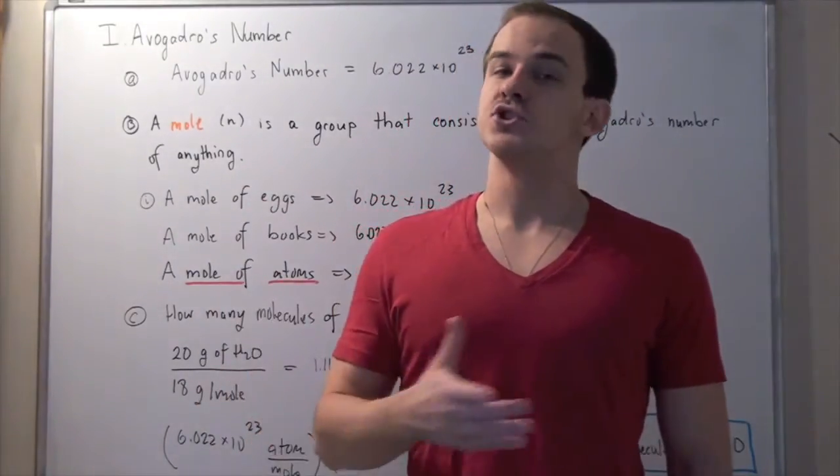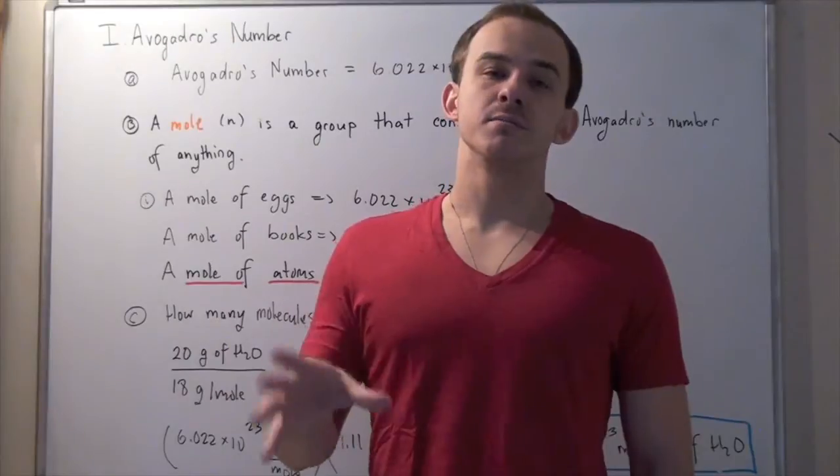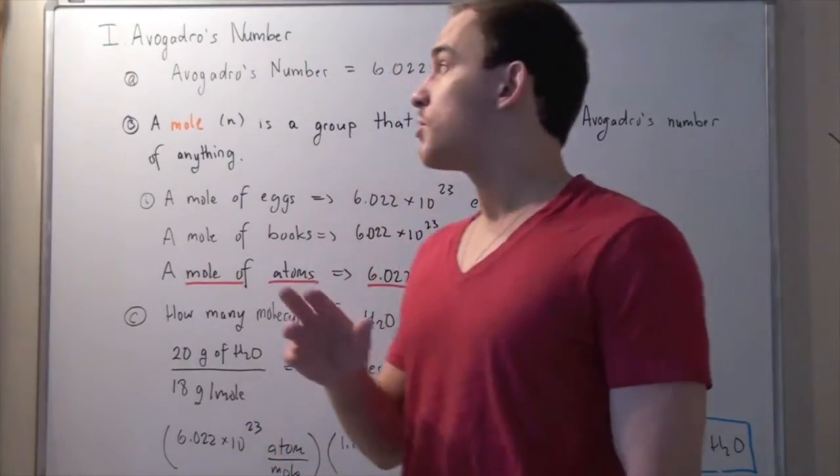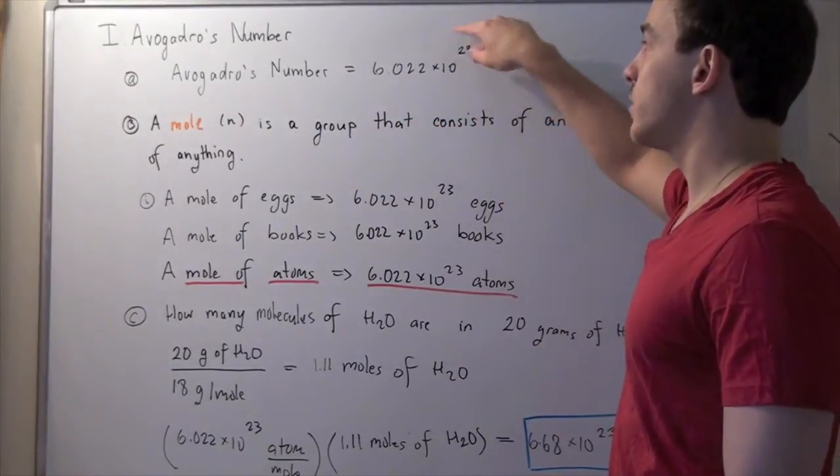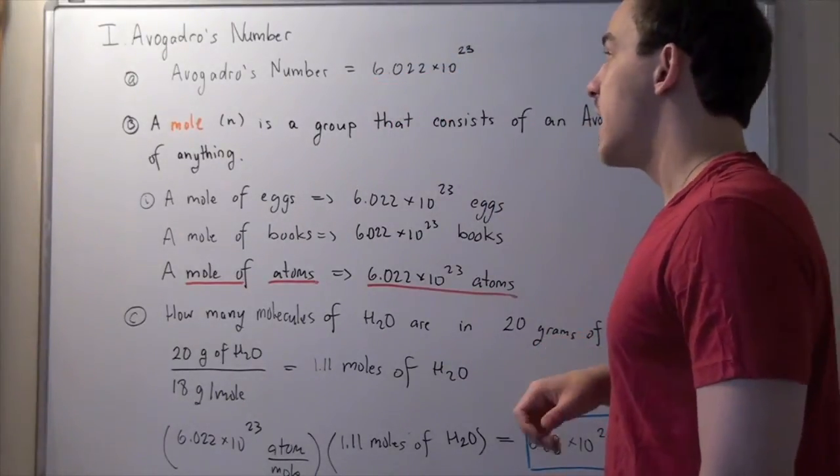Avogadro's number, just like any other number, is simply a number, but it's a very large number. More specifically, it's 6.022 times 10 to the 23. So it's a very, very big number.